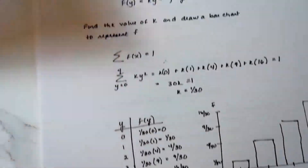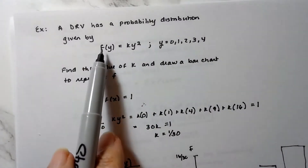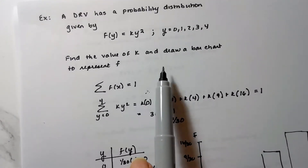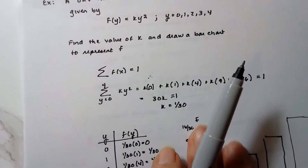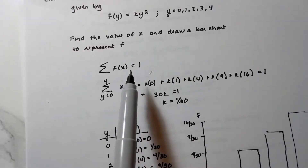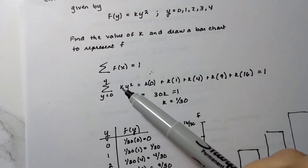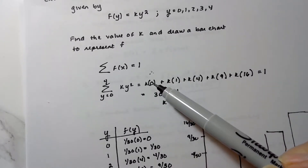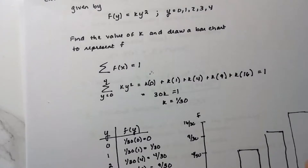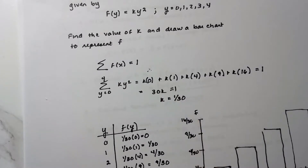Here's another one. A discrete random variable has a probability distribution given by f(y) = ky², where y goes from 0 to 4. Find the value of k and draw the bar chart. We know the sum of all probabilities must equal one, so we set up the summation from y=0 to y=4 of ky²: k(0²) + k(1²) + k(2²) and so on, all equal to one. Adding those like terms and solving gives k = 1/30.